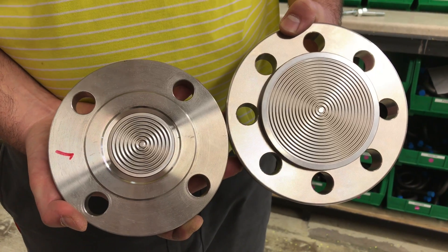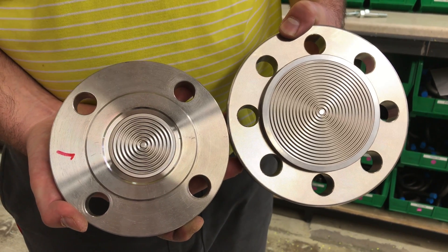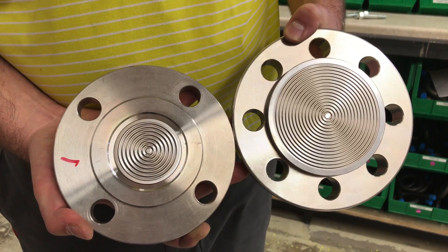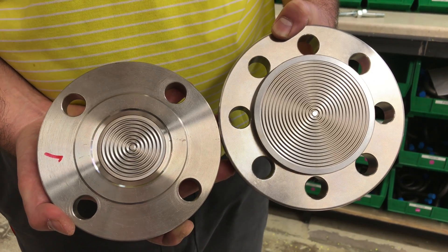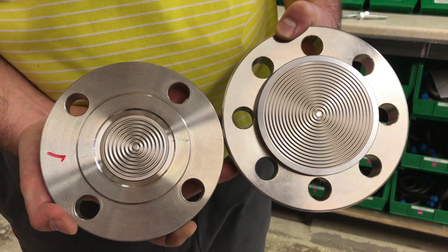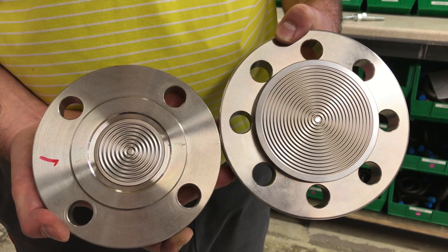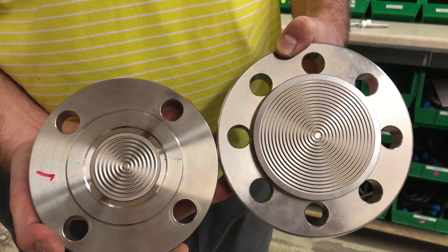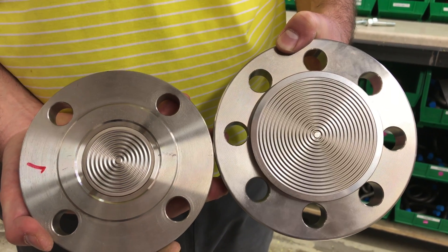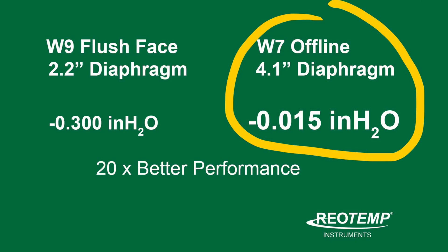The W7 with its 4.1 inch diaphragm has an effective surface area three and a half times larger than the flush face seal. That added surface area makes the diaphragm much more sensitive and more able to absorb fill fluid expansion without exerting a false pressure onto the transmitter sensor.